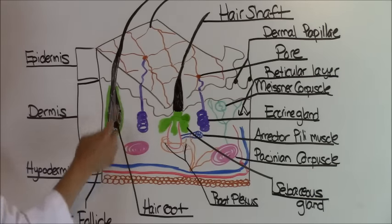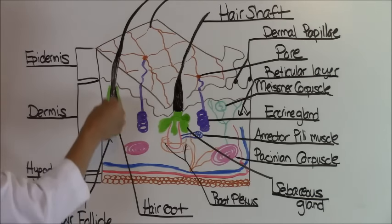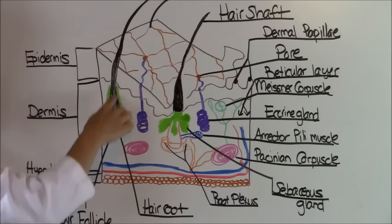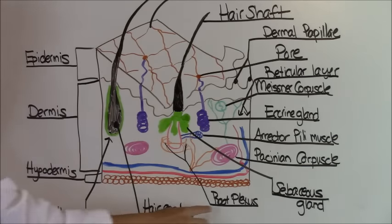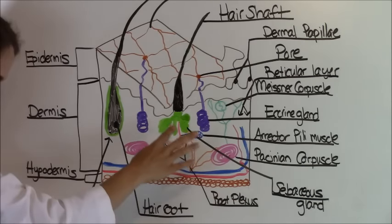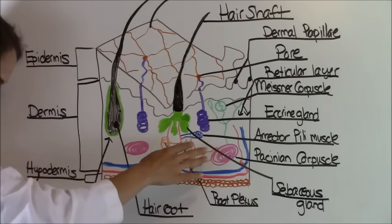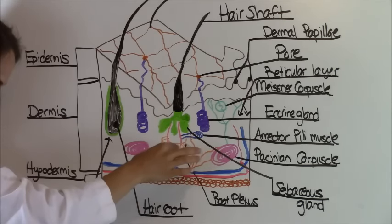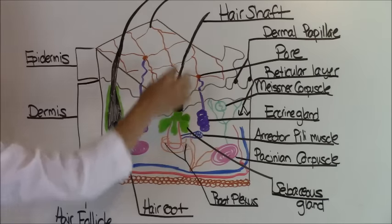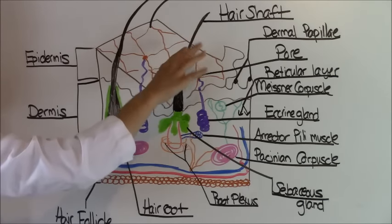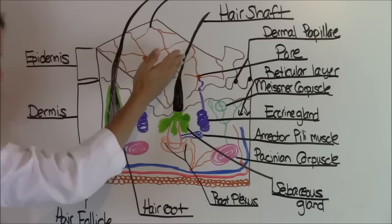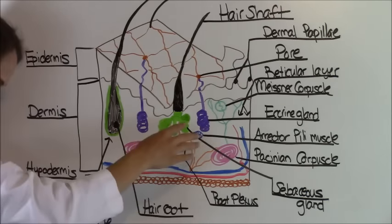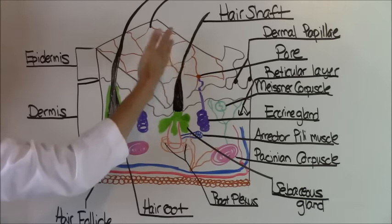And then next you have the hair follicle. This is this little green layer outlying this hair shaft. The hair follicle just extends from the epidermis into the dermis. And then next you have the root plexus. This is a nerve, a knot of sensory nerve endings that wrap around the hair bulb. What it does is, whenever your hair gets touched or barely moved, you can feel it. The reason you can feel when your hair is moved or touched is because of the root hair plexus.